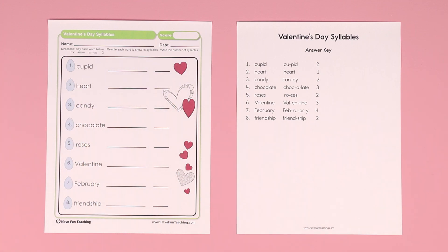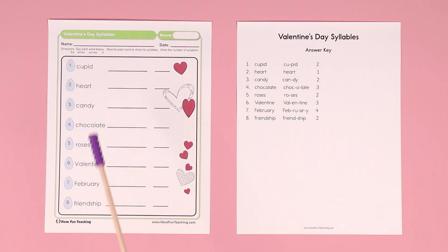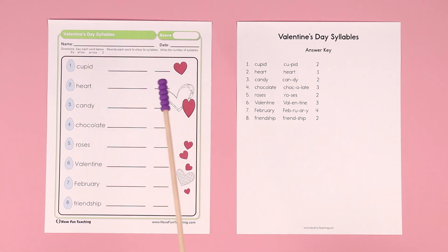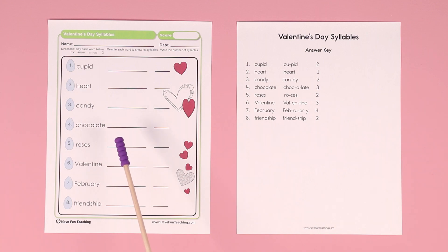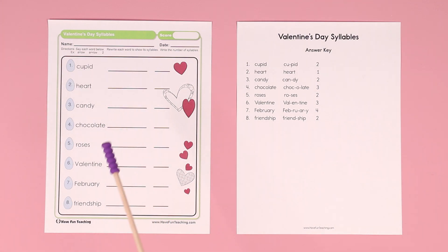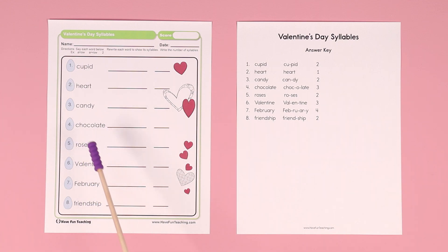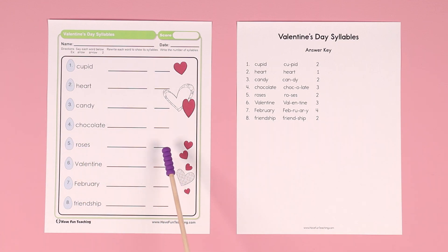For the second one, heart — have them say it while they clap. Heart — one syllable. Candy — two syllables. Chocolate — three syllables, cha-co-lit — three syllables. Roses — ro-ses — two syllables.